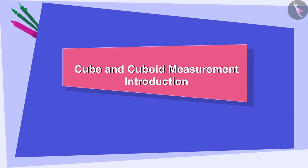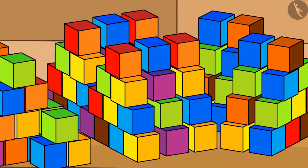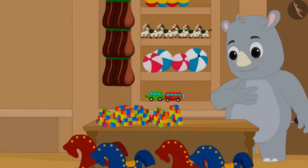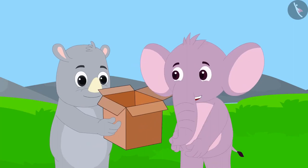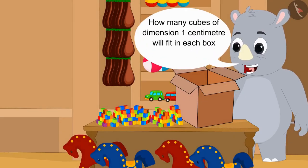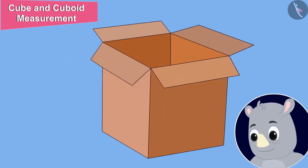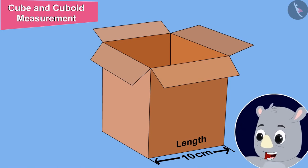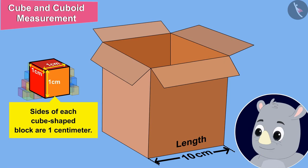Hello kids! In this video, we will learn to measure cube and cuboid. Gagu has brought cube shaped blocks to sell in his shop — all sides of each block are 1 cm. He bought cube shaped boxes to pack and sell them. The length of one cube shaped box is 10 cm, and the sides of each cube block are 1 cm, so the length equals 10 cubes.